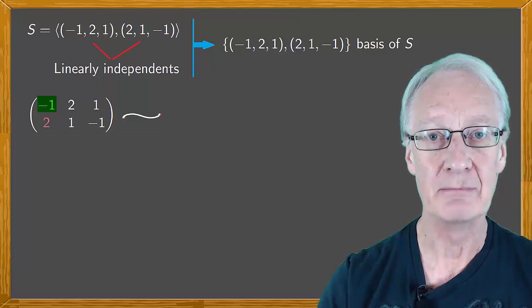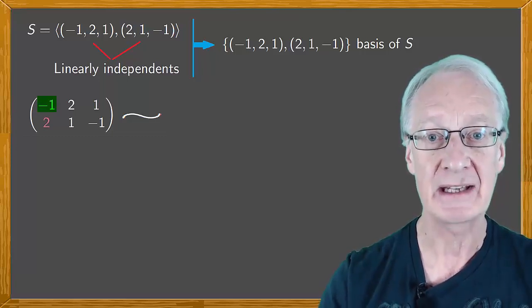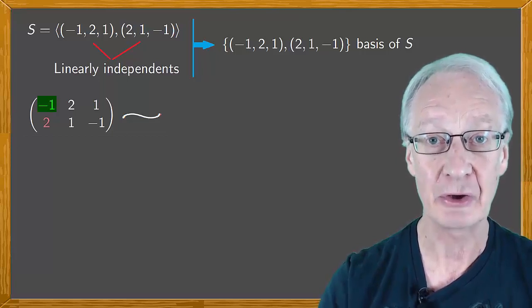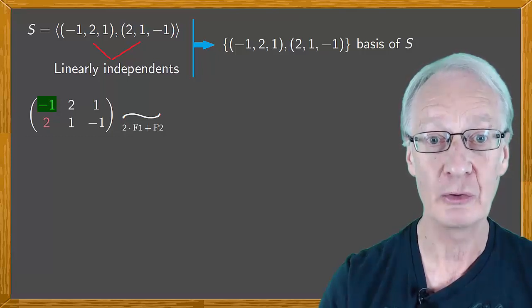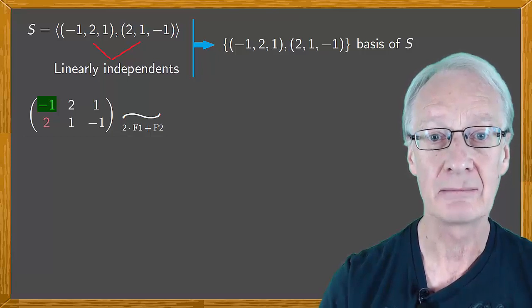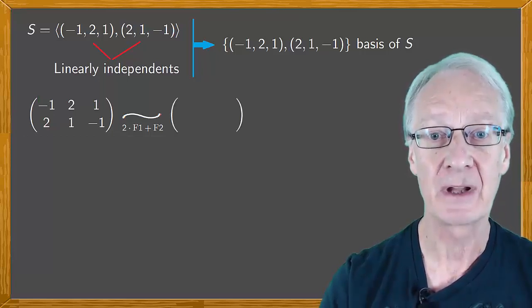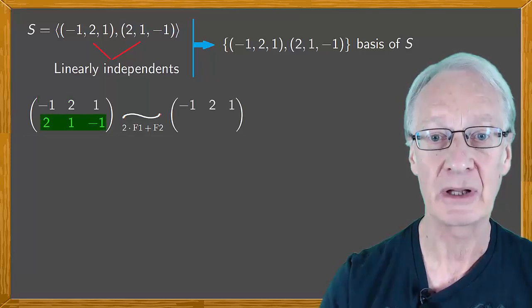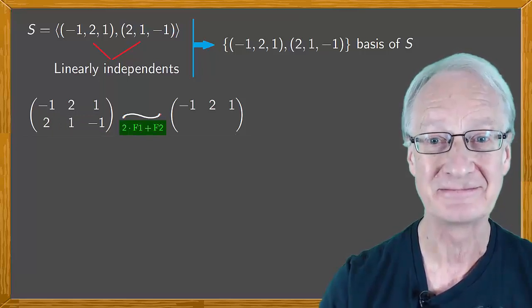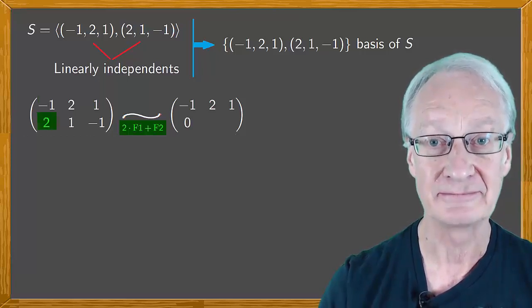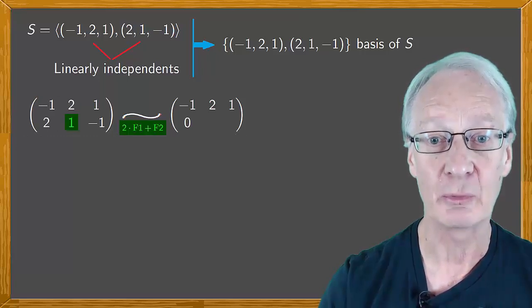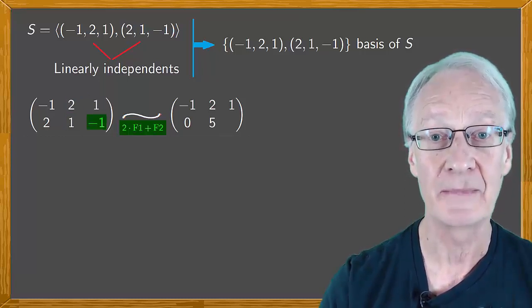What number must be multiplied by -1 such that adding it to 2 gives the result 0? Clearly 2. So we multiply the first row by 2 plus the second row and then we have a new matrix. Now we copy the first row and replace the second row by the first row multiplied by 2 plus the second row. We have 2 times -1 is -2 plus 2 is 0. 2 times 2 is 4 plus 1 is 5 and 2 times 1 is 2 plus -1 is 1.